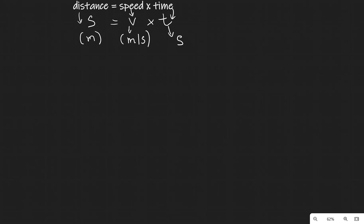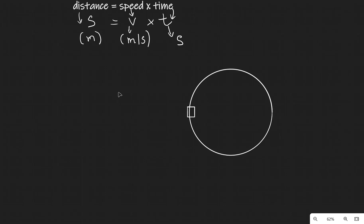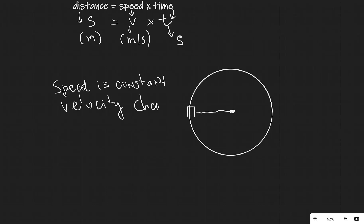Here's an interesting example involving circular motion. If something is moving in a circle — like a person swinging a rock on a string — we can have a situation where the speed is constant but the velocity is changing. The reason is that the magnitude of the motion remains the same, but the direction is changing.